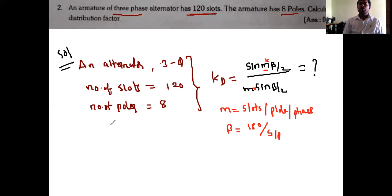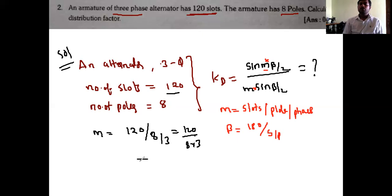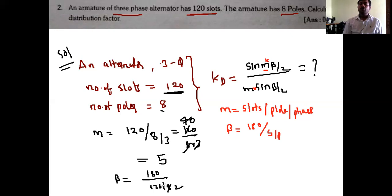We need to find kd. First, find m: m equals number of slots divided by poles times phases, so 120 divided by 8 divided by 3, which equals 5. So m equals 5. Next, beta equals 180 divided by slots per pole. Slots per pole is 120 divided by 8, which equals 15. So beta equals 180 divided by 15, which equals 12 degrees.